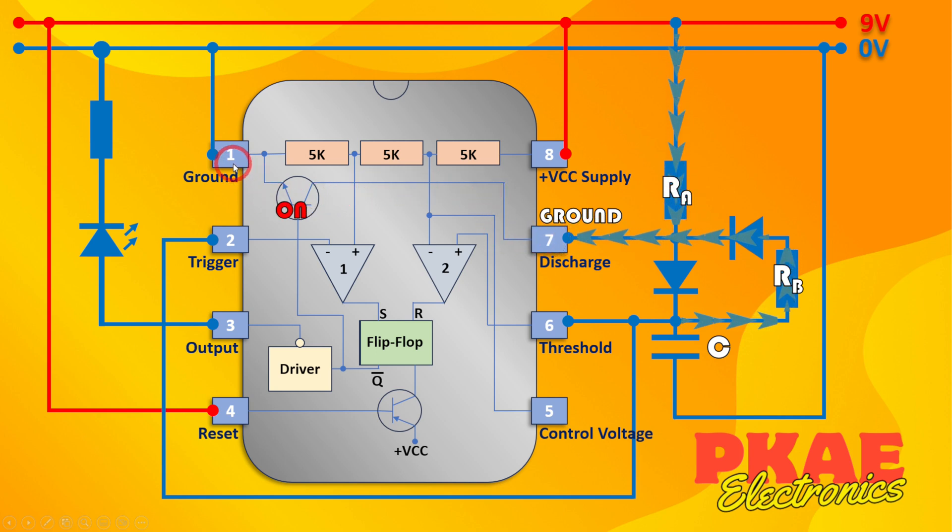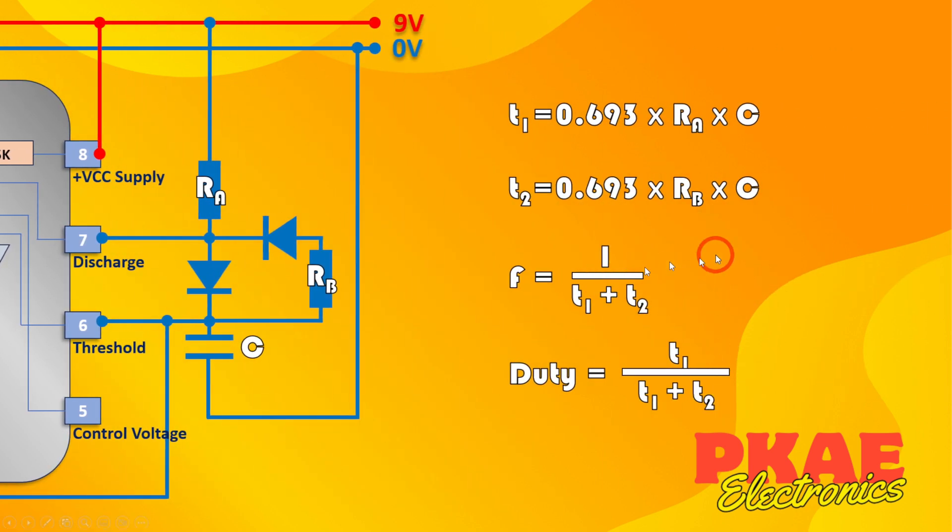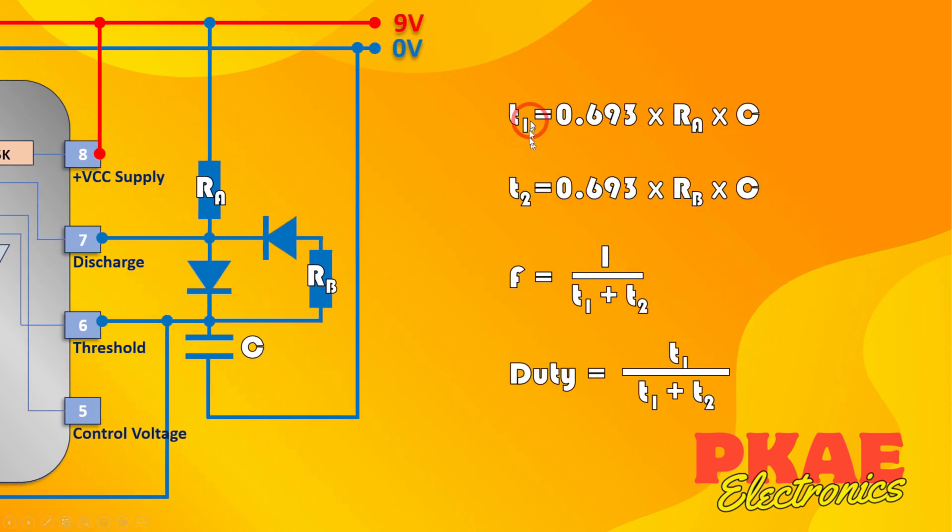And now the calculations for the timing look like this. T1, or your on time, is 0.693 times RA, the value of this resistor here, times C, the value of this capacitor. And T2, your off time, is 0.693 times RB, this resistor here, times C, your capacitor. That's it. So T1 and T2 are actually the same calculations.